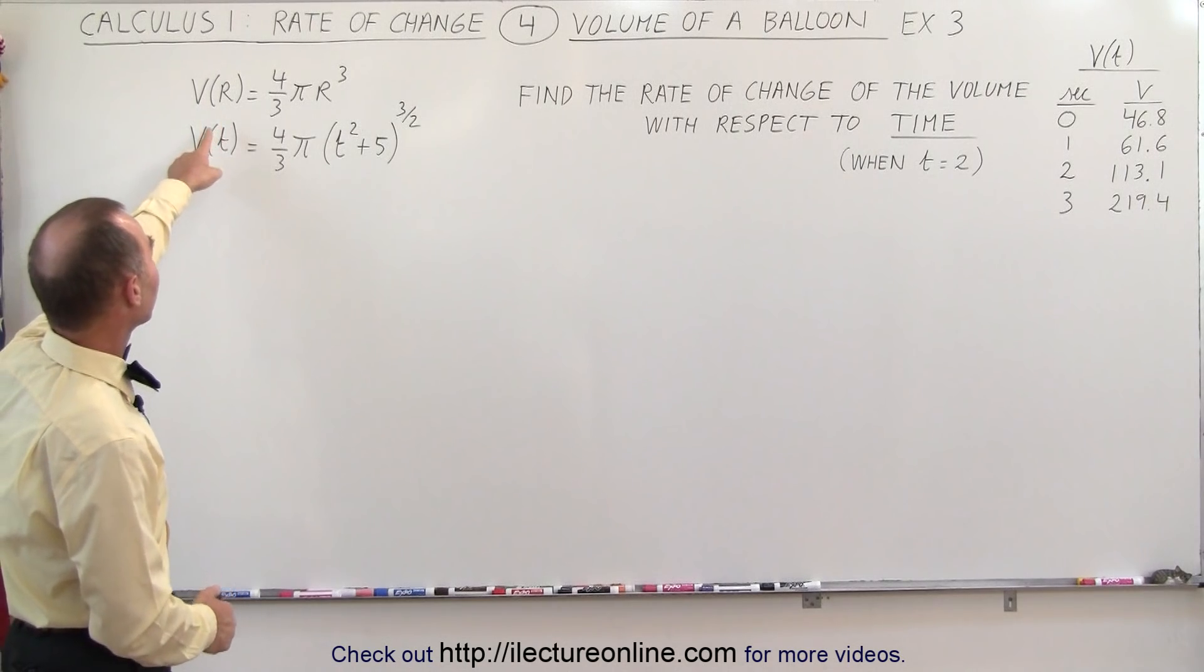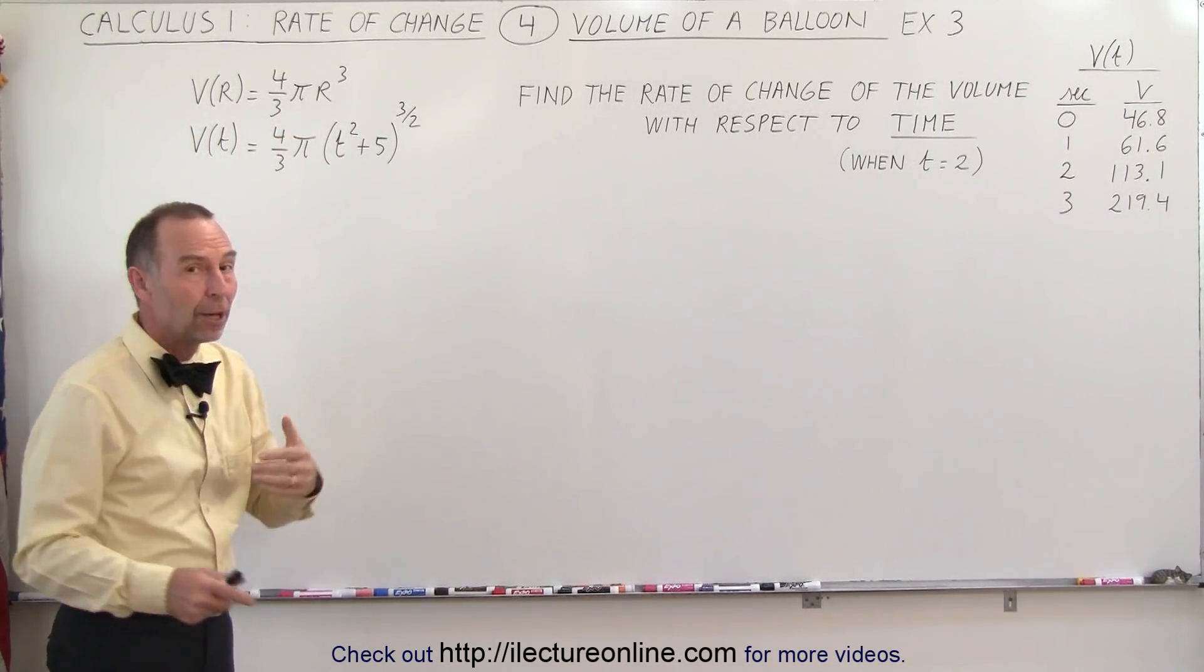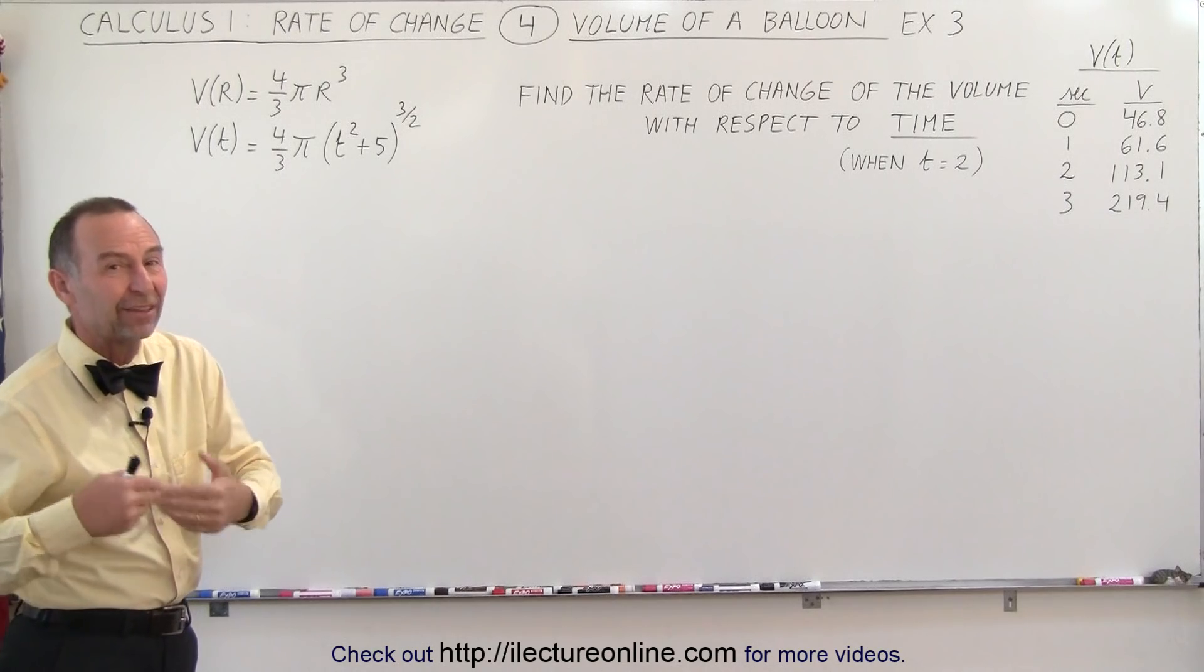Now we understand that the equation for the volume is equal to 4 thirds pi r cubed, but that's relative to the radius—it's as a function of the radius.